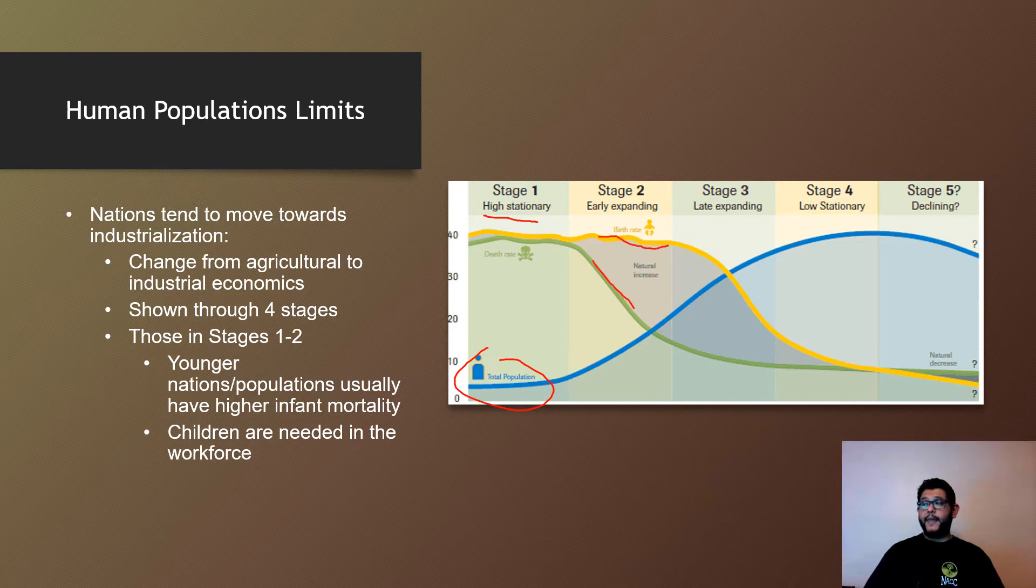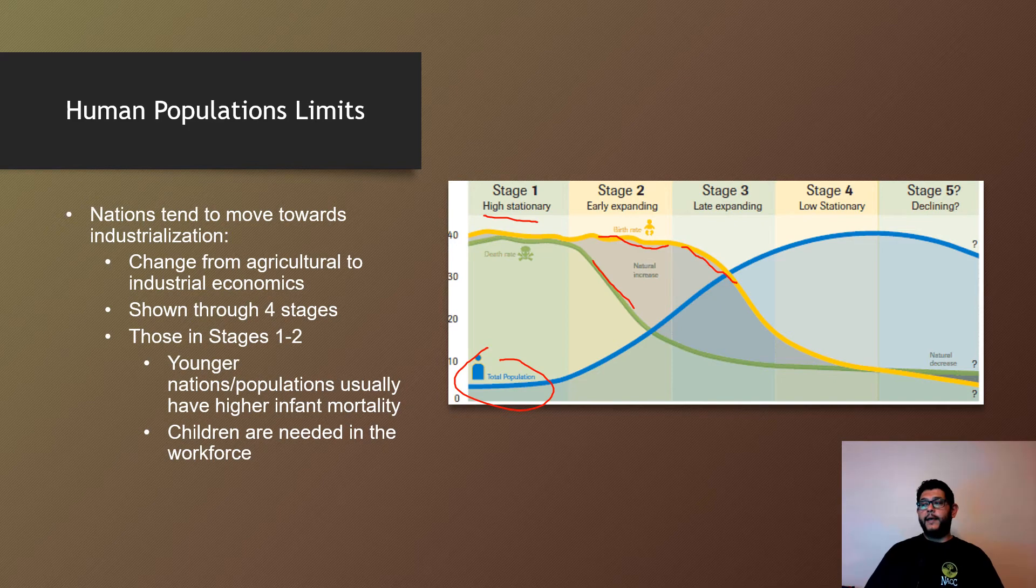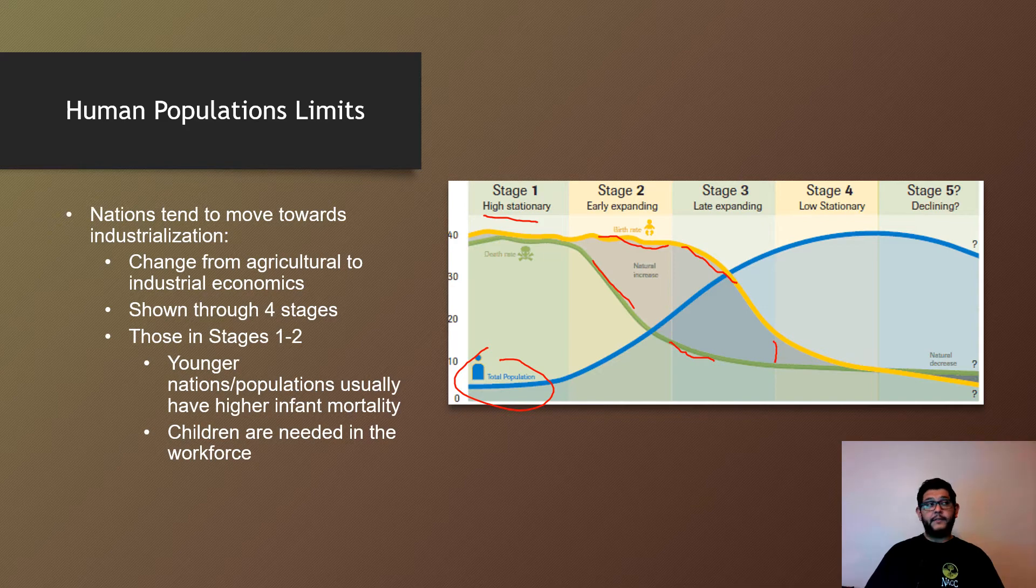In stage three, you have slower expansion. Birth rate begins to drop and death rate continues to drop until towards the end they get very close to each other. The gap closes again, but it's not as high as stage one—it's much lower.